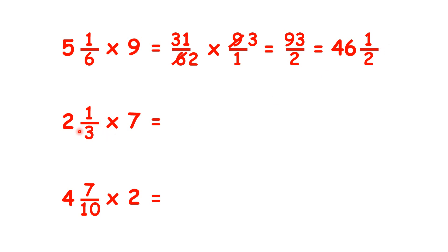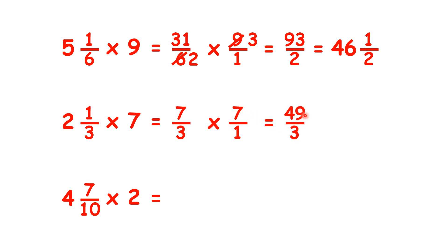Two and one-third is the same as seven-thirds. Multiply by seven over one. We can't cross-simplify here because seven isn't in the three times table. So we just do the multiplication, and then forty-nine divided by three is sixteen, remainder one, so sixteen and a third.